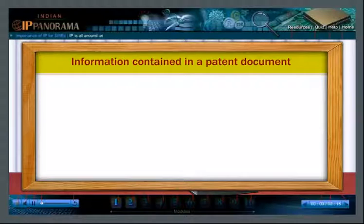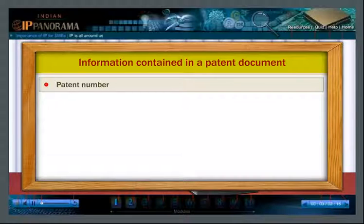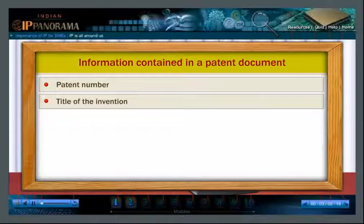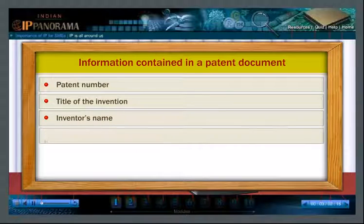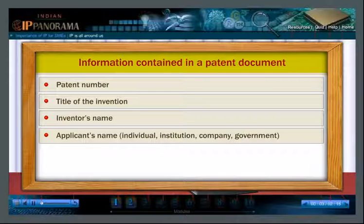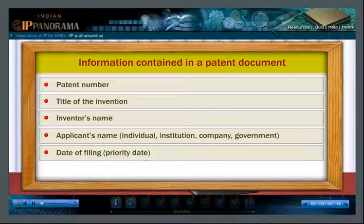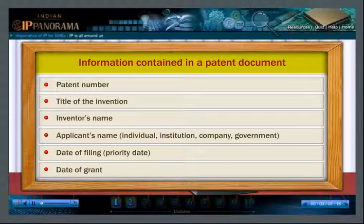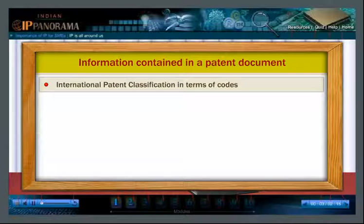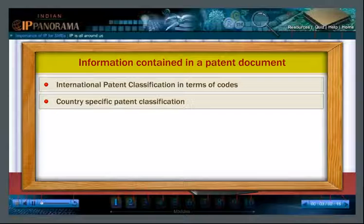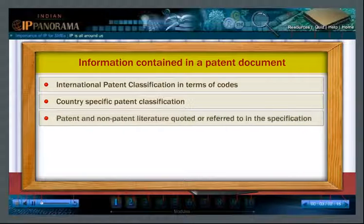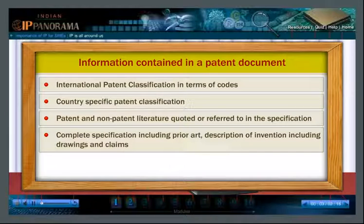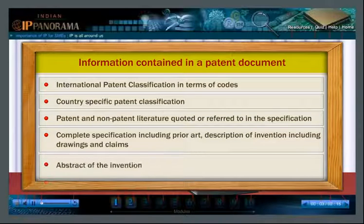Have a look. Information contained in a patent document: patent number, title of the invention, inventor's name, applicant's name (individual, institution, company, or government), date of filing or priority date, date of grant, international patent classification in terms of codes, country-specific patent classification, patent and non-patent literature quoted or referred to in the specification, complete specification including prior art, description of invention including drawings and claims, and abstract of the invention.